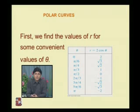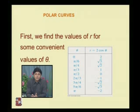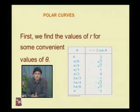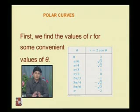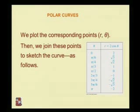For theta = 0, r = 2; theta = pi/6 gives r = √3; theta = pi/4 gives r = √2; theta = pi/3 gives r = 1; theta = pi/2 gives r = 0 since cos(pi/2) = 0. For theta = 2pi/3, r = −1; theta = 3pi/4, r = −√2; theta = 5pi/6, r = −√3; theta = pi, r = −2. Plot all these points and join them to sketch the curve.